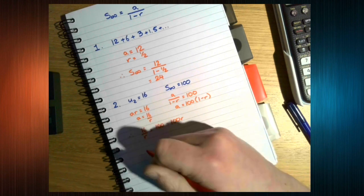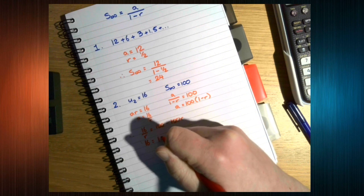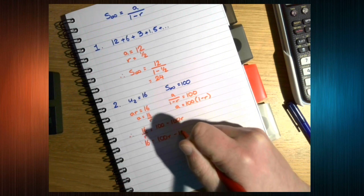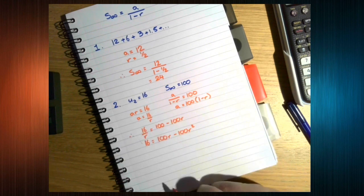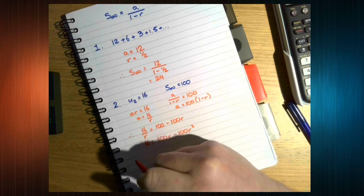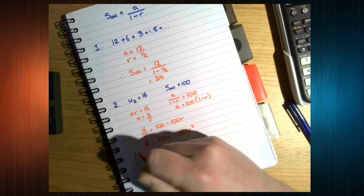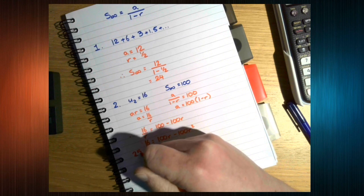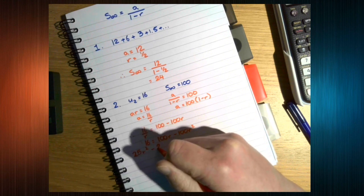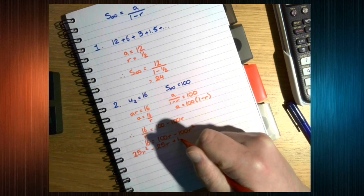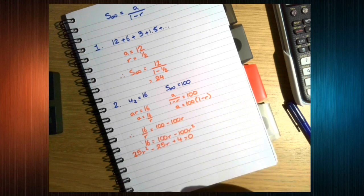Which if we multiply through by r, and then move everything over one side, and divide by two or divide by four at the same time, we get there.